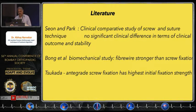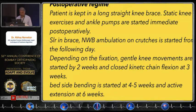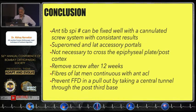Looking at the literature, comparative studies of screw versus suture show no significant difference in clinical outcome or stability. Post-op, start early mobilization — bedside bending begins around three to four weeks. Monitor to prevent fixed flexion deformity. Anterior tibial spine fractures can be fixed well with a cannulated screw system. Use superomedial and lateral accessory portals for proper fixation angles. It is not necessary to cross the epiphyseal plate or go through the posterior cortex. Remove the screw at 12 weeks.